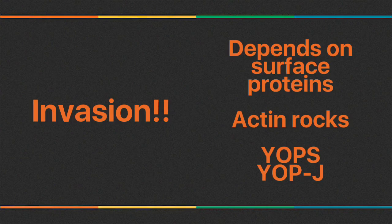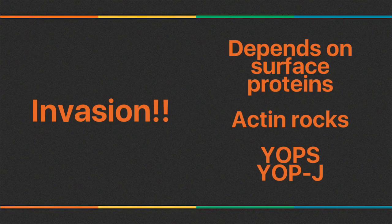YOPs are an example of virulence factors that act after invasion of human cells. Their important effects are to inhibit phagocytosis and inhibit cytokine production by macrophages. YopJ is a protease responsible for inhibiting activation of host defenses — it cleaves signal transduction proteins required for induction of TNF synthesis.